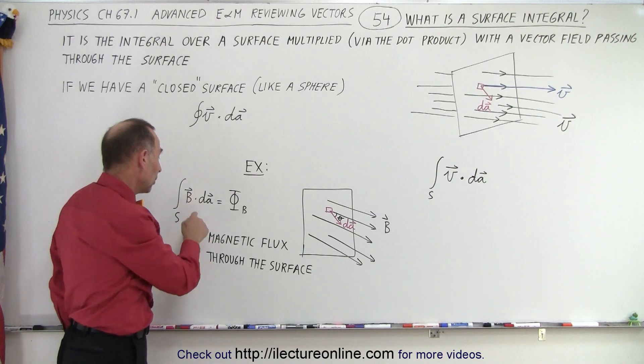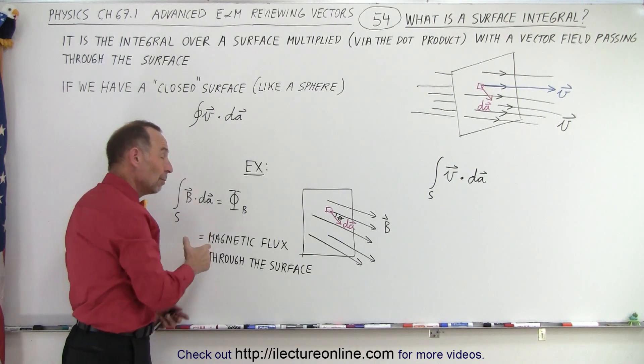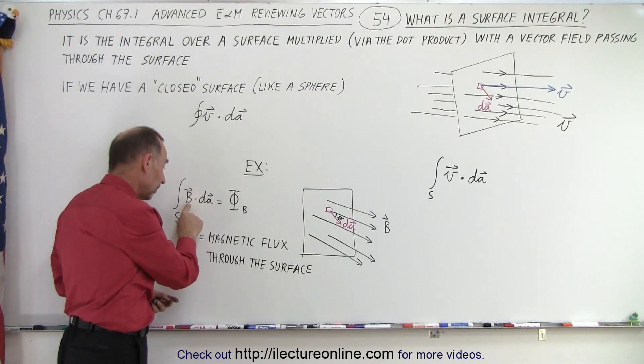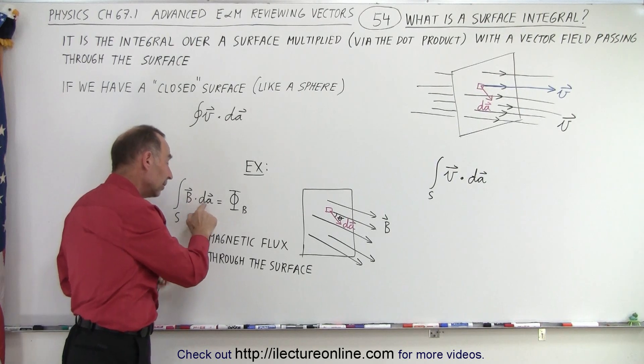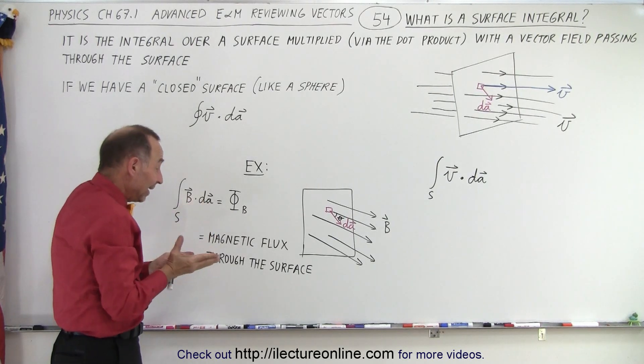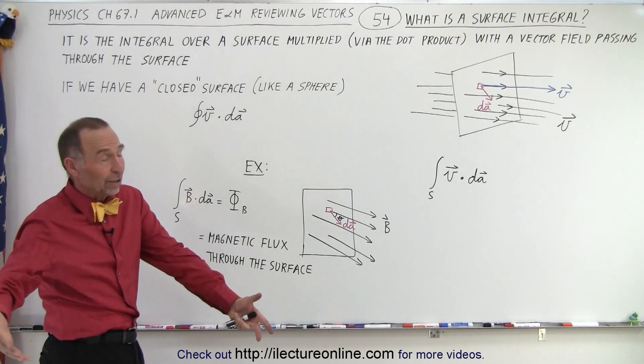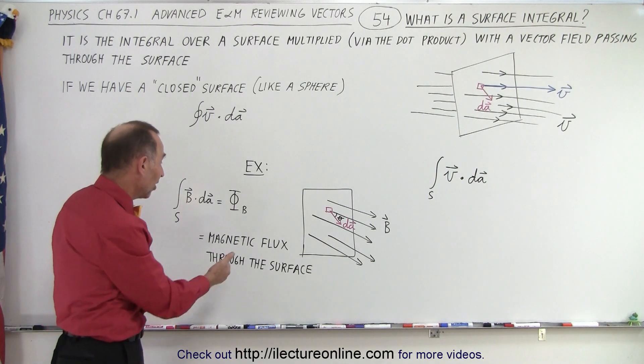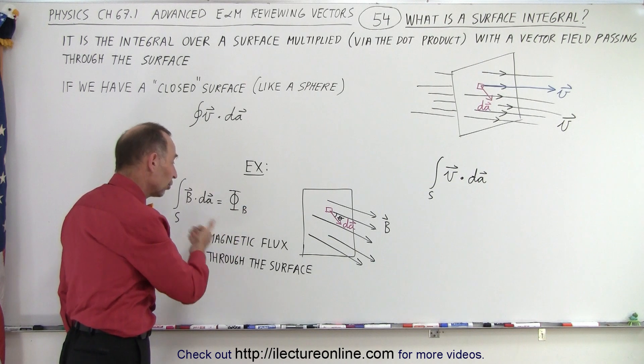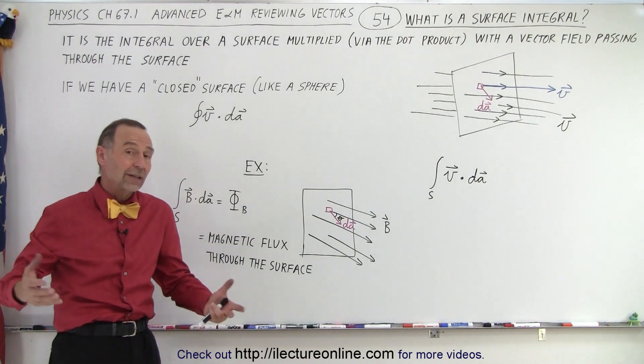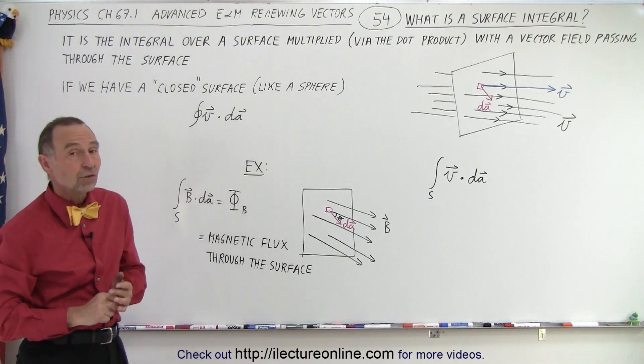And so that comes out when we multiply B dot dA, we multiply the magnitude of the magnetic field times the magnitude of the area of the surface, and times the cosine of the angle between them. If the angle is 90 degrees, we end up with zero flux. So essentially that gives you the magnetic flux through the surface, which is a very good example of what we mean with a surface integral.